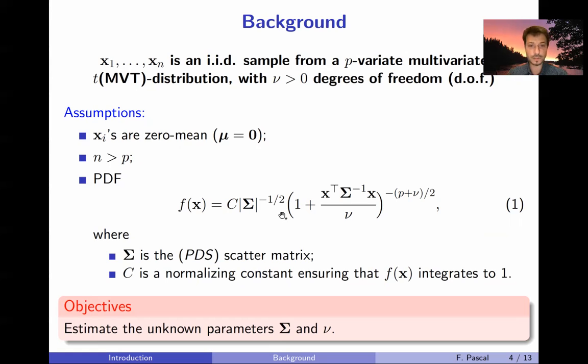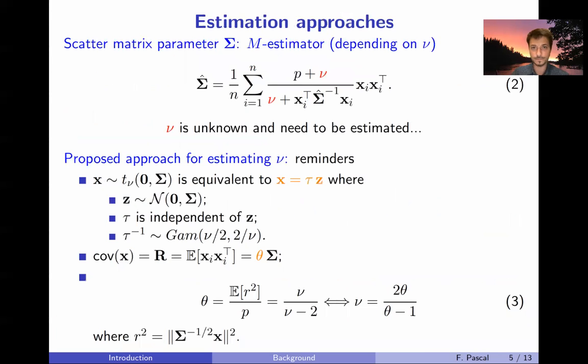On the estimation approach for the scatter matrix parameter sigma in case of T-distribution, we can use the corresponding M-estimator that takes this form. And as you can see in this M-estimating equation, the sigma depends on nu. So nu is assumed to be unknown and needs to be estimated.